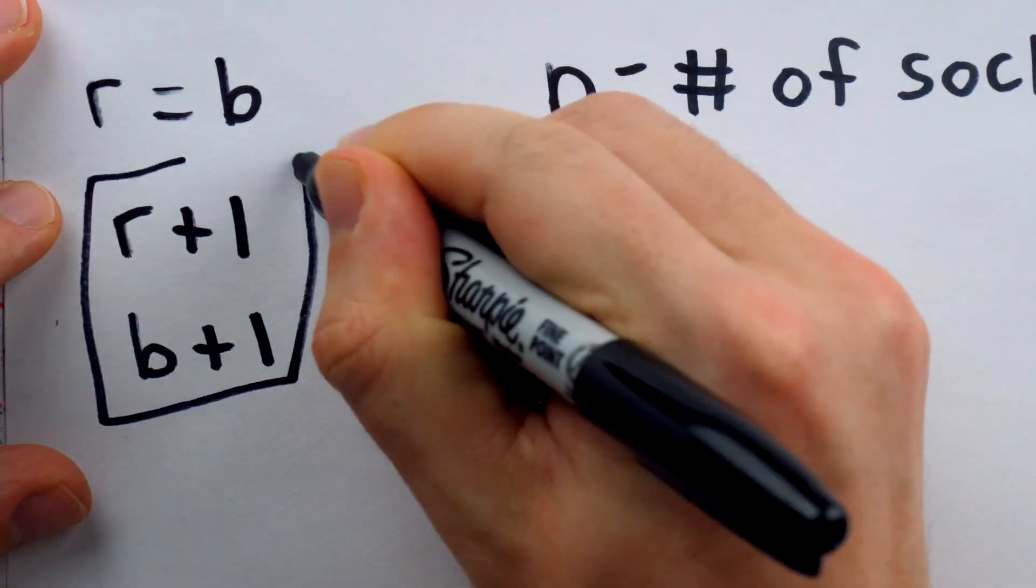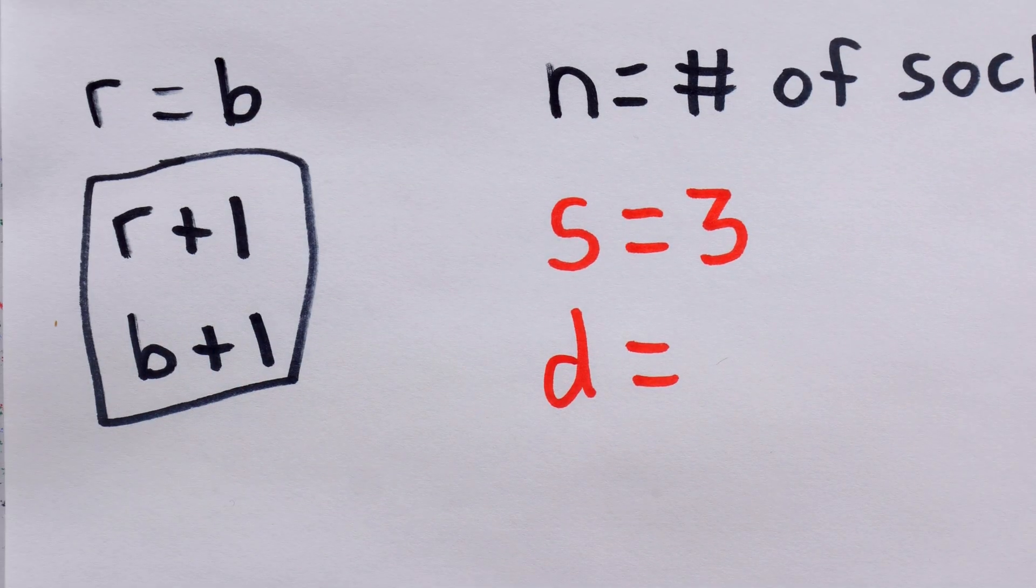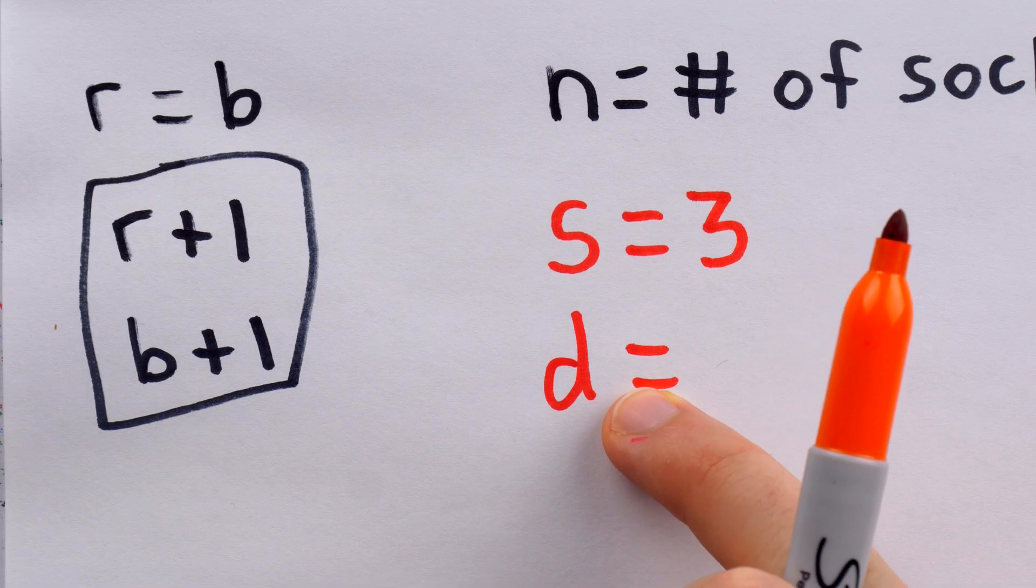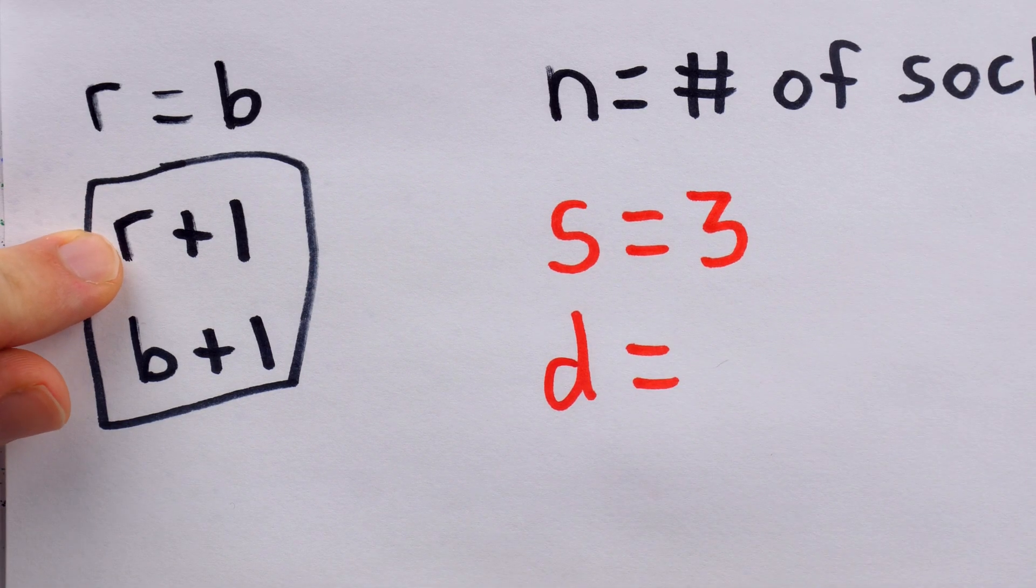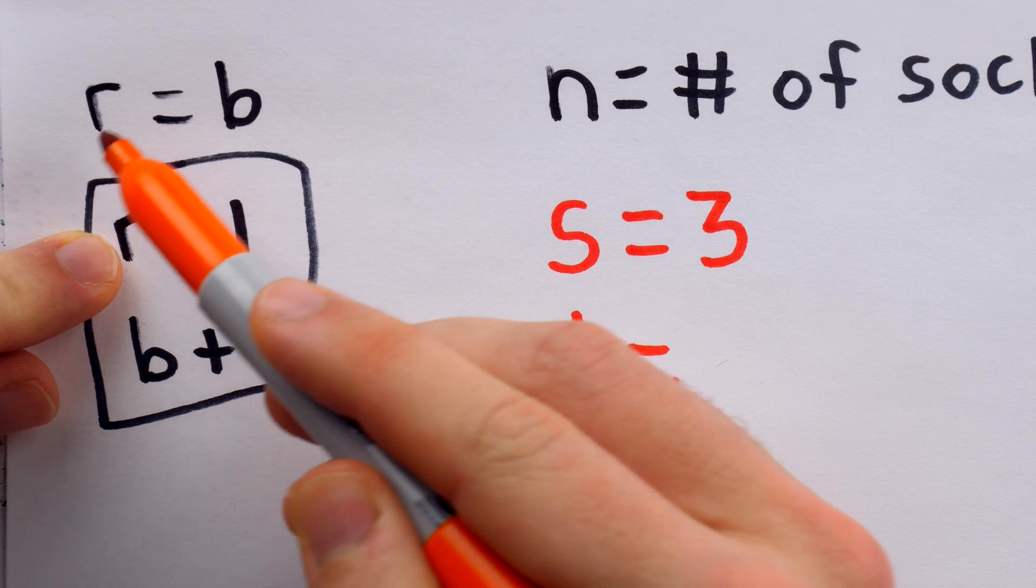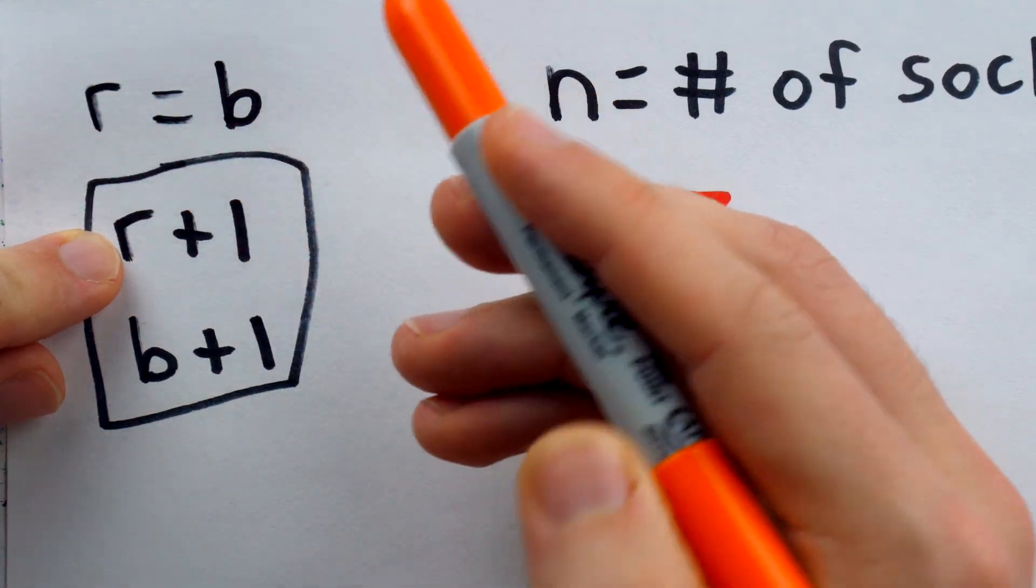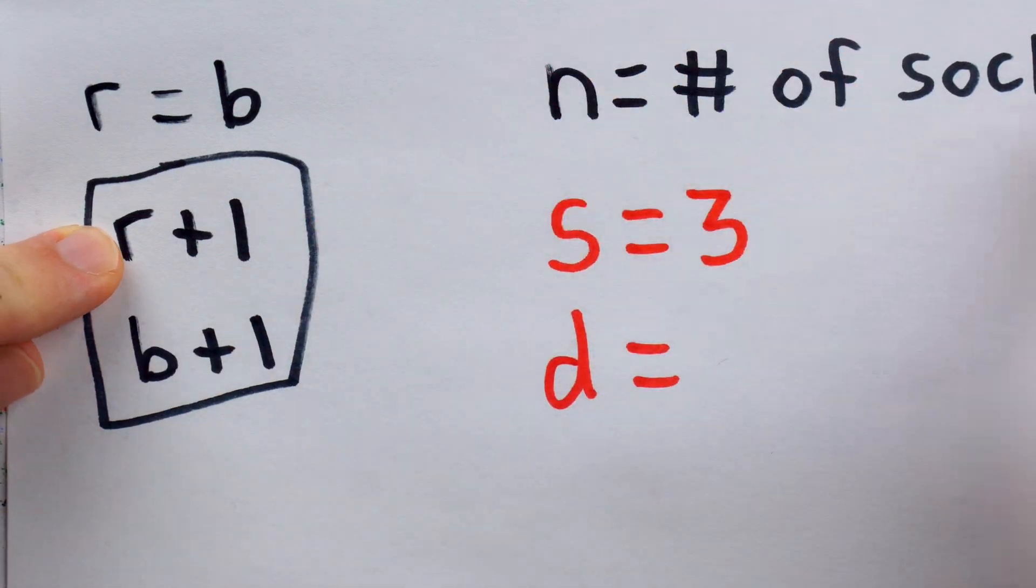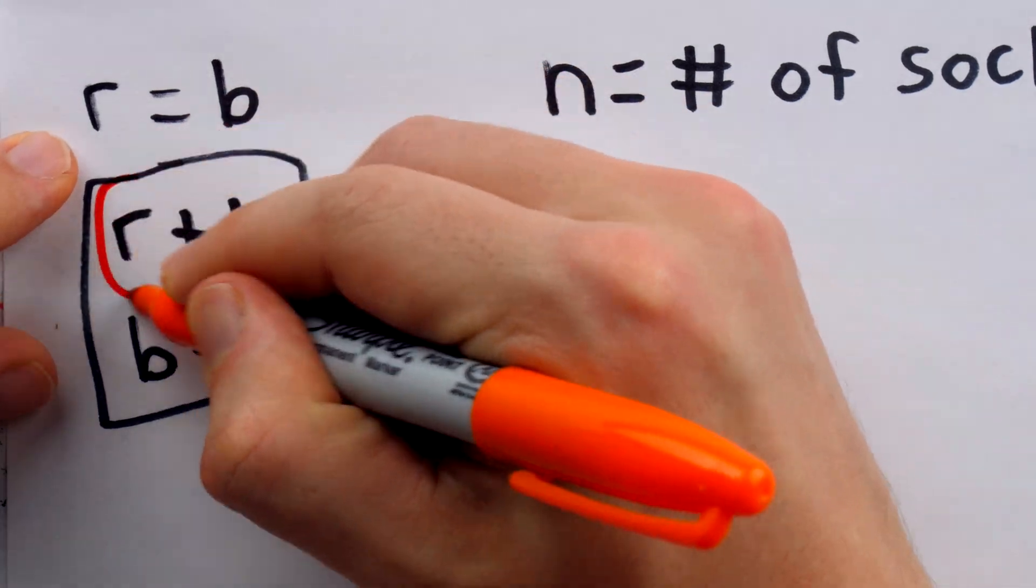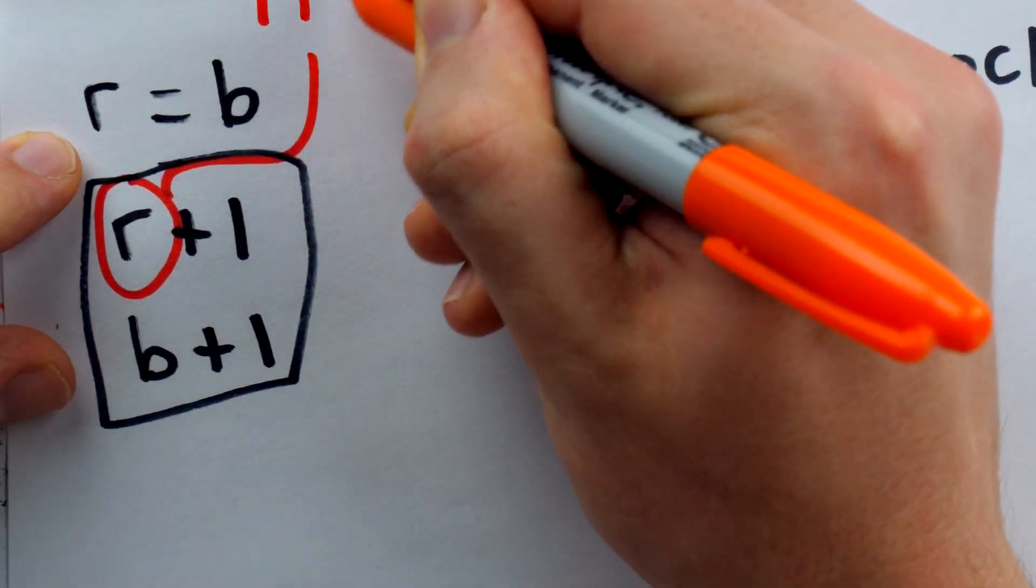Of course, in this situation, both of these numbers are the same. So, D, the minimum number of socks we must take to guarantee a mixed pair, is R plus 1. But remember, we have just as many red socks as blue socks, so R is half the total number of socks. That means that R is N divided by 2.